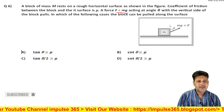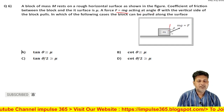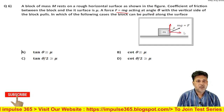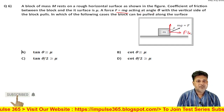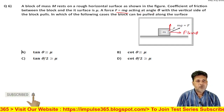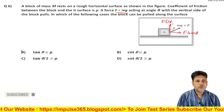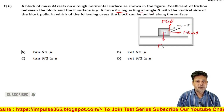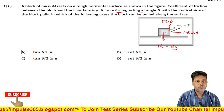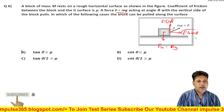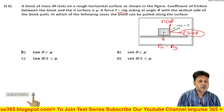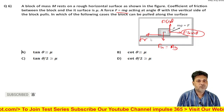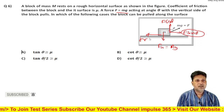The force looks like this. Looking at horizontal components, the horizontal component is F sin theta and the vertical component is F cos theta. The weight of the object is Mg. F sin theta is the driving force and F cos theta affects the normal force.